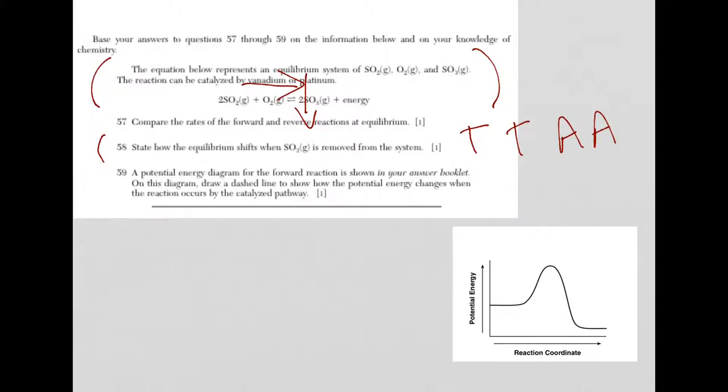Finally, in 59, potential energy diagram you see here in the bottom. This is the potential energy diagram from the answer booklet. And it tells you here to draw a dash line to show how the potential energy changes when the reaction occurs with a catalyst.